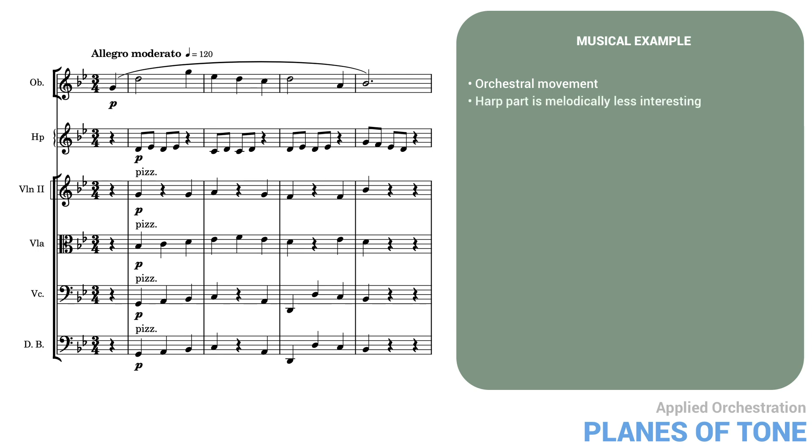Note that the harp part is melodically much less interesting than the oboe part. This is intentional, because the aim here is not to overshadow the oboe solo, but to complement it through contrast. Properly done, as here, the added movement makes the overall effect richer for the listener.